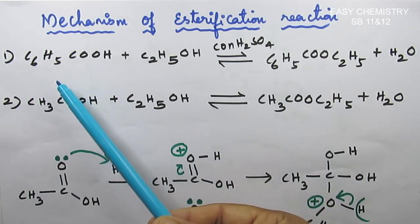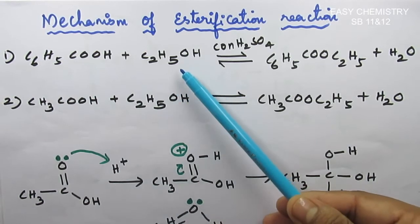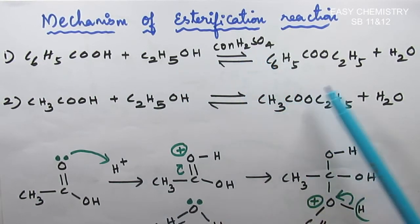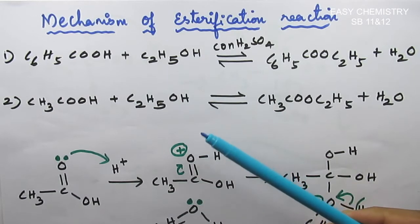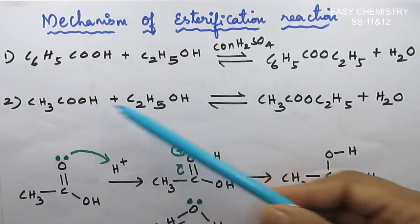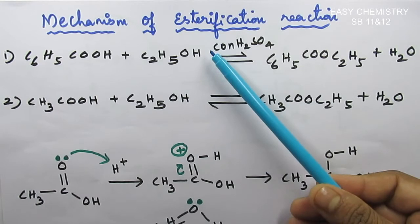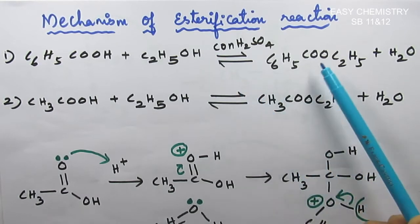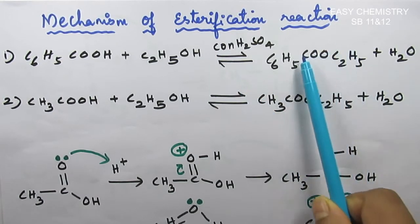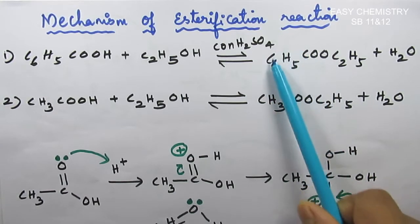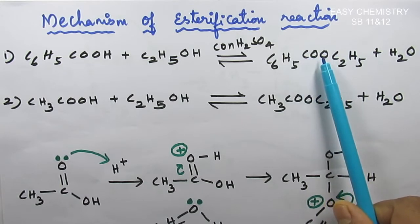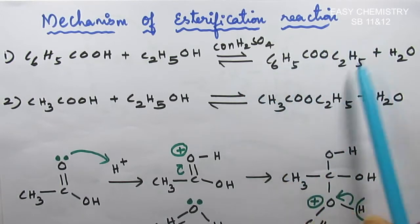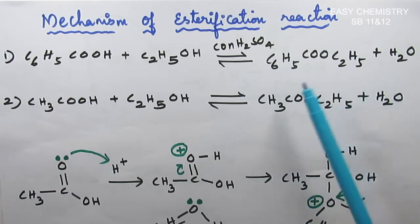This is benzoic acid which reacts with ethyl alcohol in the presence of concentrated H2SO4. It gives ethyl benzoate and water. This is the first reaction. In this textbook, we are going to talk about the mechanism of ester. This is the esterification. If left side is an alkyl or aryl, right side is an alkyl or aryl, there is a COO group - that is ester. This is the esterification reaction.